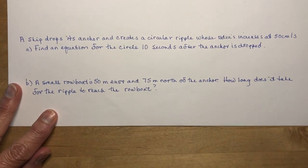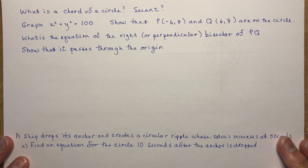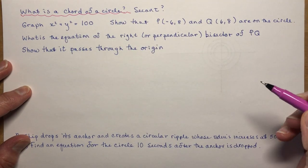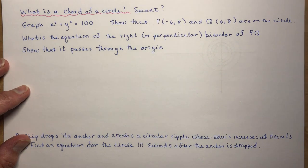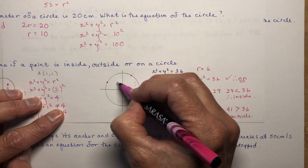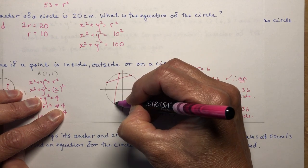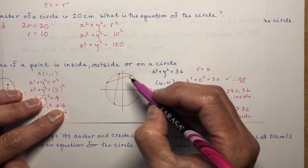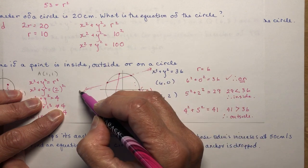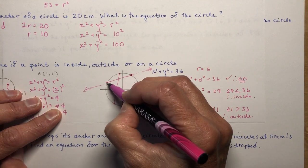We're going to talk about some calculations involving chords of circles. A chord is a line that joins two points on a circle — it could be any two points. A secant of a circle is the line that goes all the way through, and you'll use secants a lot in calculus. The chord is just within the boundaries of the circle, from one side to another.